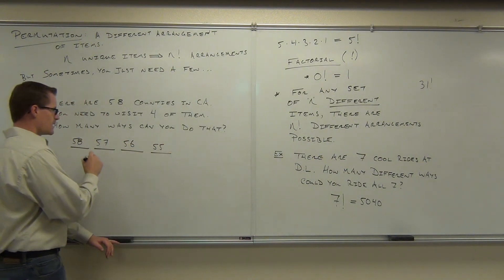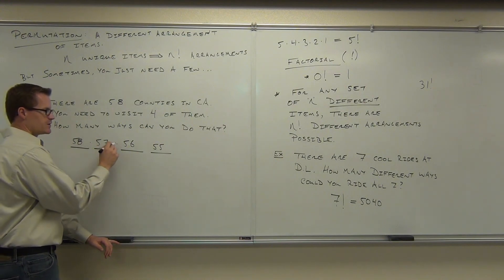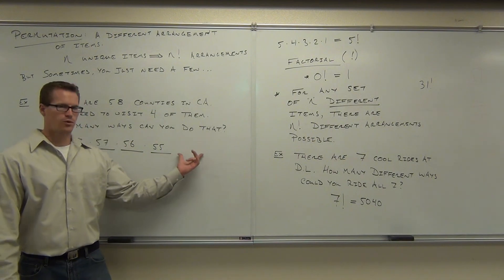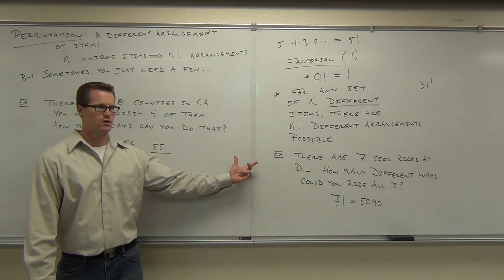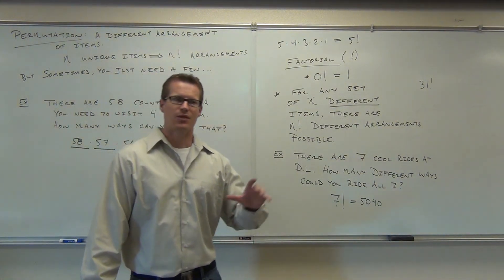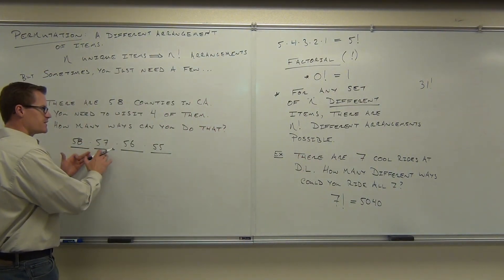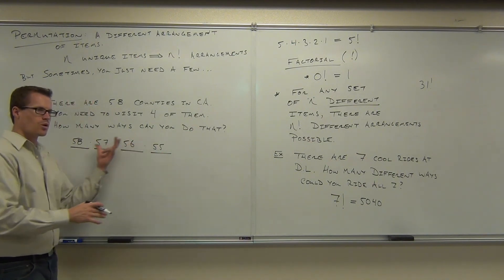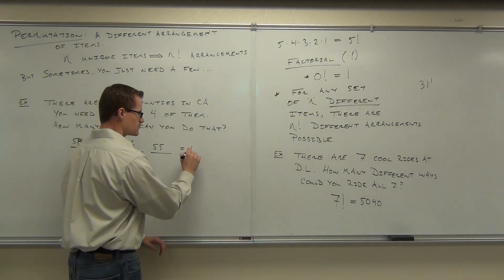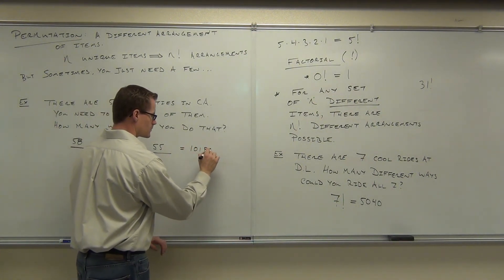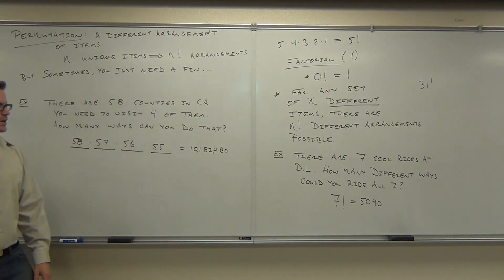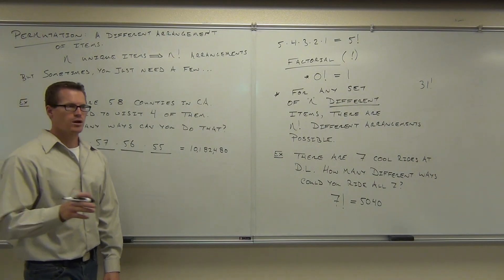And what this is saying is that if you have 58 choices for the first one, 57 for the second one, 56 for the third one, 55 for the fourth one, do we have to go on to the 54, 53, 52, 51, 50, all the way down to one? That would be if you were visiting all 58 counties. In this case though, we've got just 58, 57, 56, 55 because we're only going to four counties. How many is that by the way? So if you were governor and you wanted to visit four counties, that's 58 times 57 times 56 times 55.